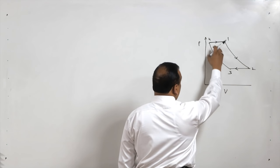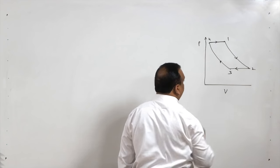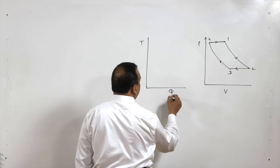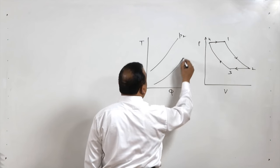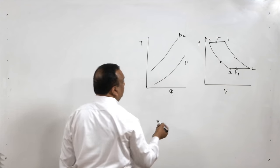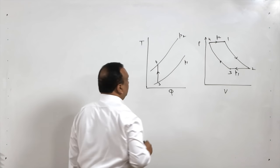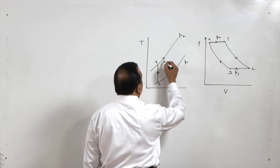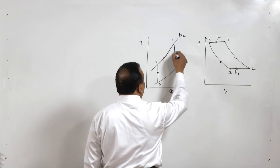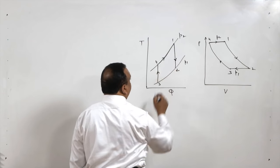Expansion takes place in a turbine, compression in a separate compressor, and heat addition in a separate dedicated combustion chamber for adding heat to the working fluid. If we transform this on a temperature-entropy diagram, the cycle works between two pressures, P2 and P1. Process 3 to 4 is isentropic compression which takes place inside a compressor. 4 to 1 is constant pressure heat addition. After state 1, expansion takes place inside the gas turbine from state 1 to state 2, which produces the output.